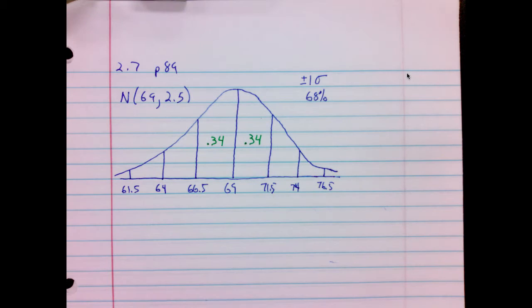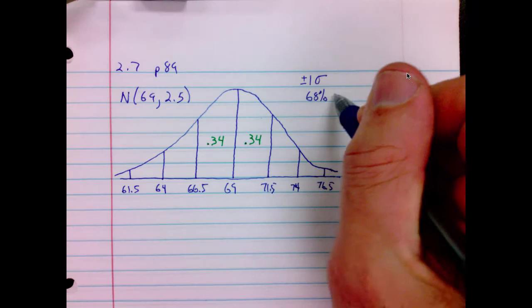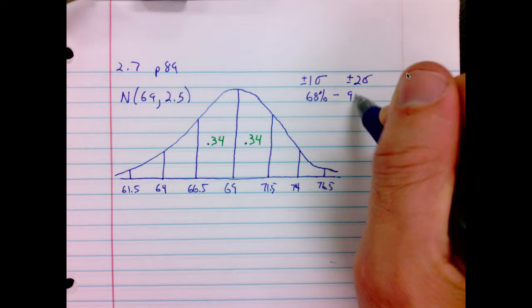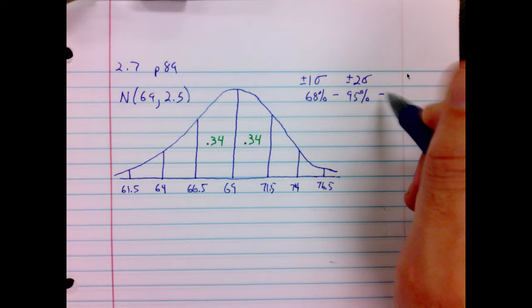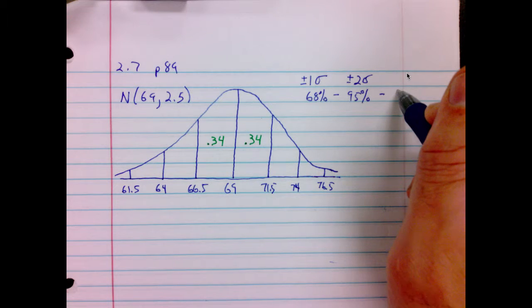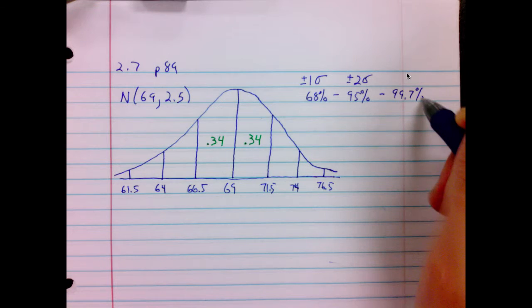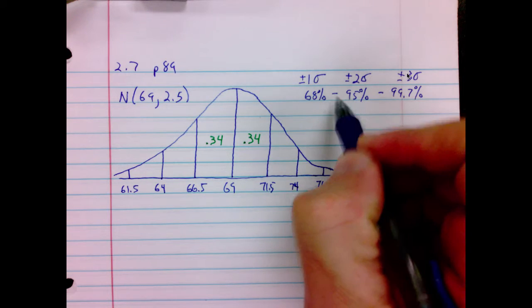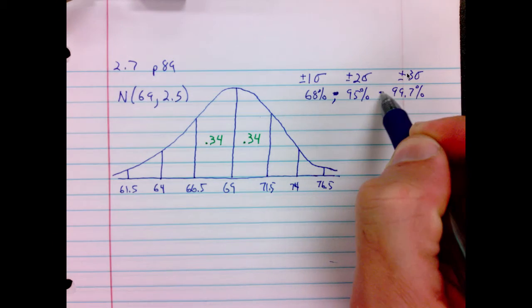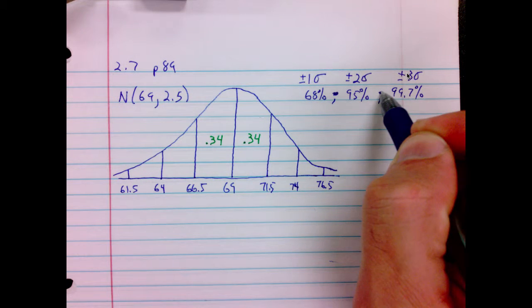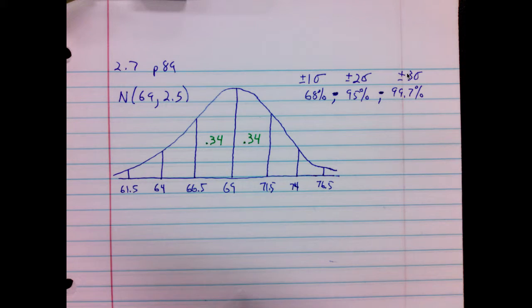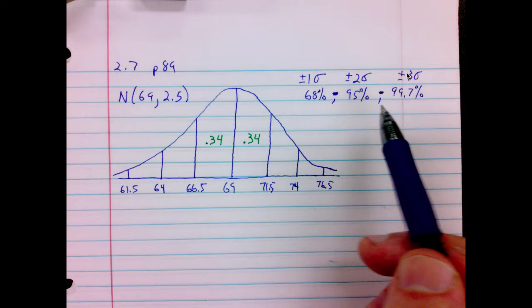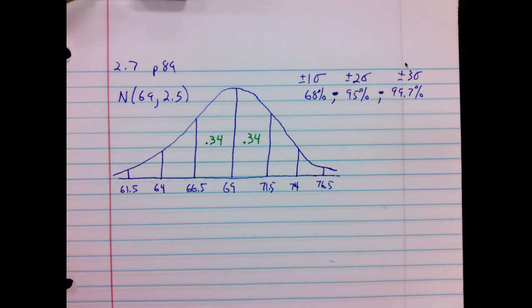Okay, plus and minus two standard deviations will be 95%. Plus and minus three standard deviations will be 99.7%. Instead of the dash here, a comma is probably a better connector. 68% one standard deviation, 95% two standard deviations, 99.7% three standard deviations.